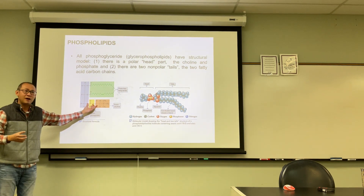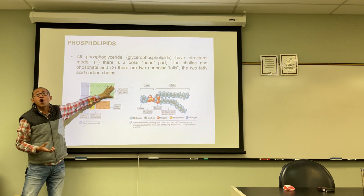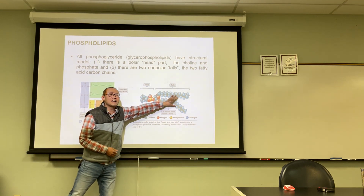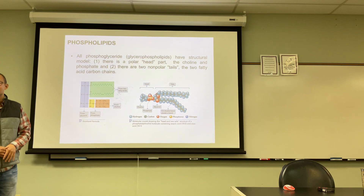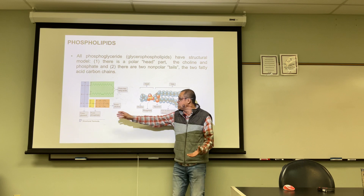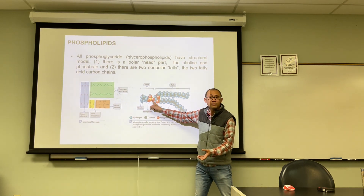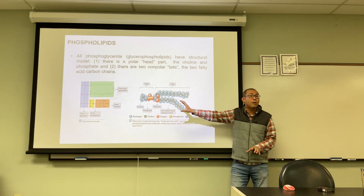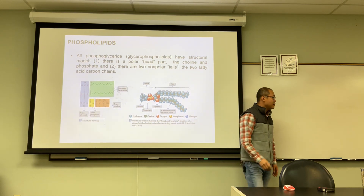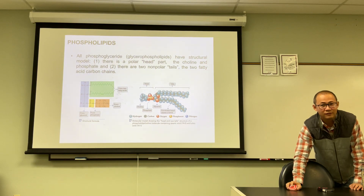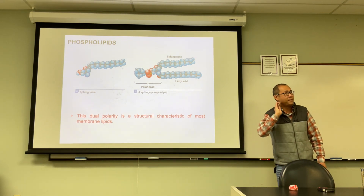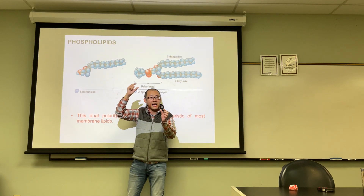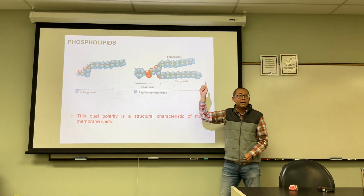The phosphoglyceride molecule looks like a polar head with two nonpolar tails. Similarly, a sphingophospholipid also has a polar head and two nonpolar tails — one tail is a fatty acid and the other is the chain of the sphingosine itself. These three types of membrane lipids all share the same structural pattern: a polar head and two nonpolar tails.